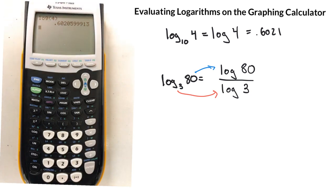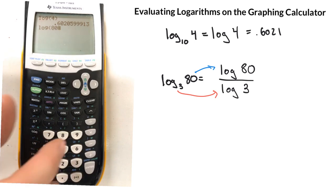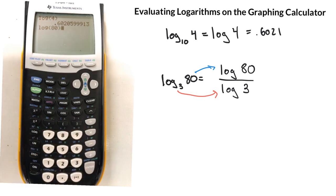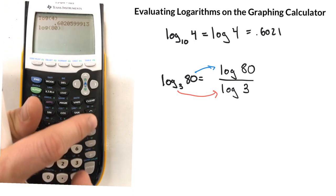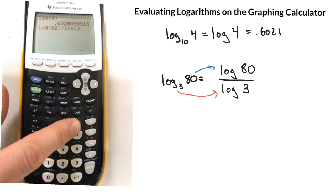So now that we have two different problems that have a log base 10, we can calculate those with our calculator doing the following. So you hit the log of 80. That's in the numerator, so make sure you close that parenthesis. And then this is a log base 10 of 80. Now we're going to divide by the log of 3. So log of 3, and we close those parentheses.